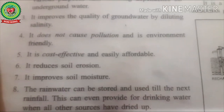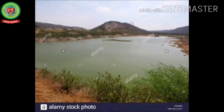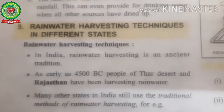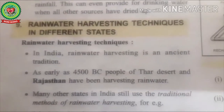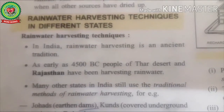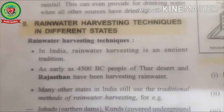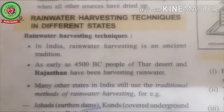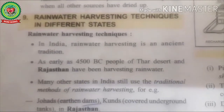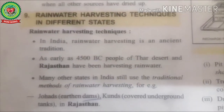Our next topic is rainwater harvesting techniques in different states of India. In India, rainwater harvesting is an ancient tradition known by different names in different states. As early as 4500 BC, people of the Thar desert in Rajasthan have been harvesting rainwater, especially in the form of tankas — underground tanks found in Rajasthan. Many other states still use traditional methods of rainwater harvesting, with different names but the same main motive: to conserve rainwater.